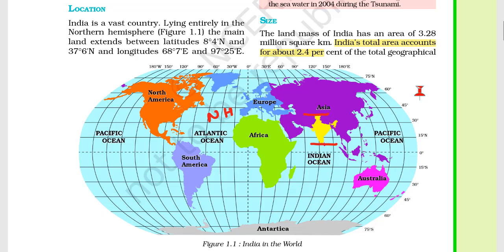Talking about longitudinal location, the westernmost point is 68 degrees 7 minutes east, and the easternmost part is in Arunachal Pradesh at 97 degrees 25 minutes east.